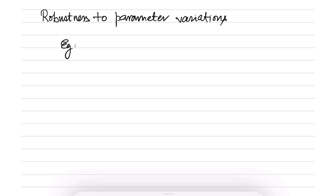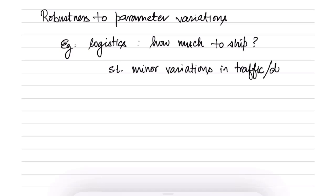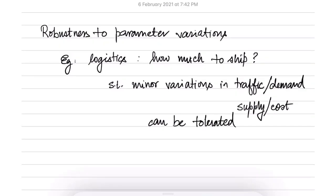For instance, consider the applications we have seen in logistics. In logistics the question is how much quantity of a certain product we want to ship. We want to decide that while keeping in mind there could be minor variations in all the problem parameters such as traffic, demand, supply, or cost. Whatever is given to us may not be exactly correct and there could be minor variations. We want to solve our problem such that these minor variations can be tolerated - in other words, we want to allow a margin of error.